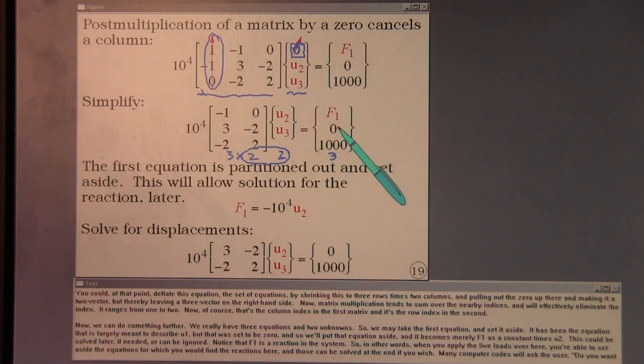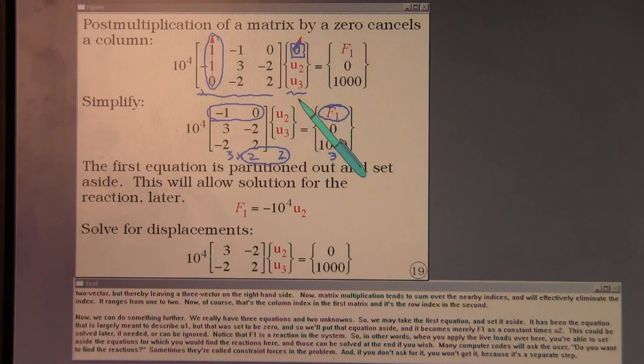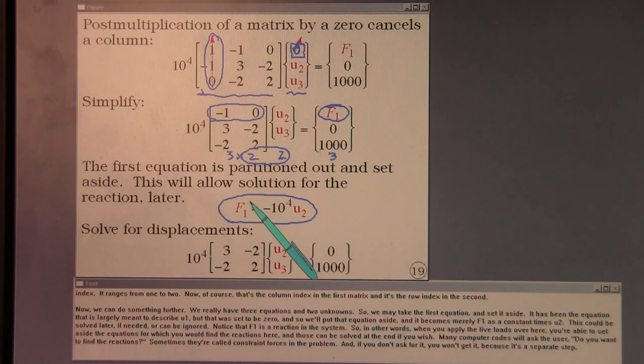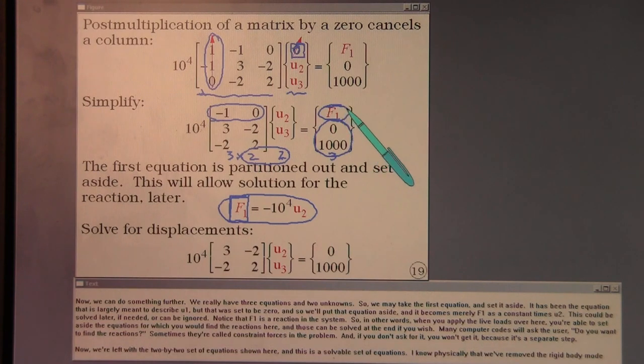Now, we can do something further. We really have three equations and two unknowns. So we may take the first equation and set it aside. It has been the equation that is largely meant to describe U1, but that was set to be zero, so we'll pull that equation aside and it becomes merely F1 is a constant times U2. This could be solved later if needed or can be ignored. Notice that F1 is a reaction in the system. So, in other words, when you apply the live loads over here, you're able to set aside the equations for which you would find the reactions here, and those can be solved at the end if you wish.